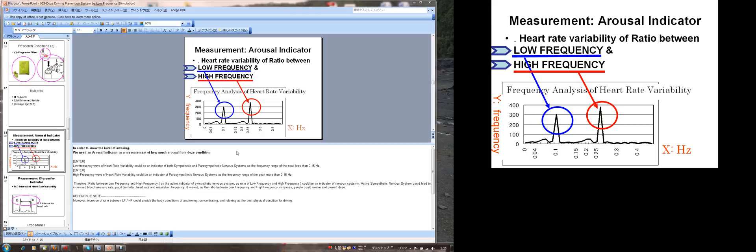Therefore, ratio between low frequency and high frequency as the active indicator of sympathetic nervous system could be an indicator of nervous systems. Active sympathetic nervous system could lead to increased blood pressure rate, pupil diameter, heart rate, and the respiration frequency. It means as the ratio between low frequency and high frequency increases, people could awake and prevent from drowsiness.